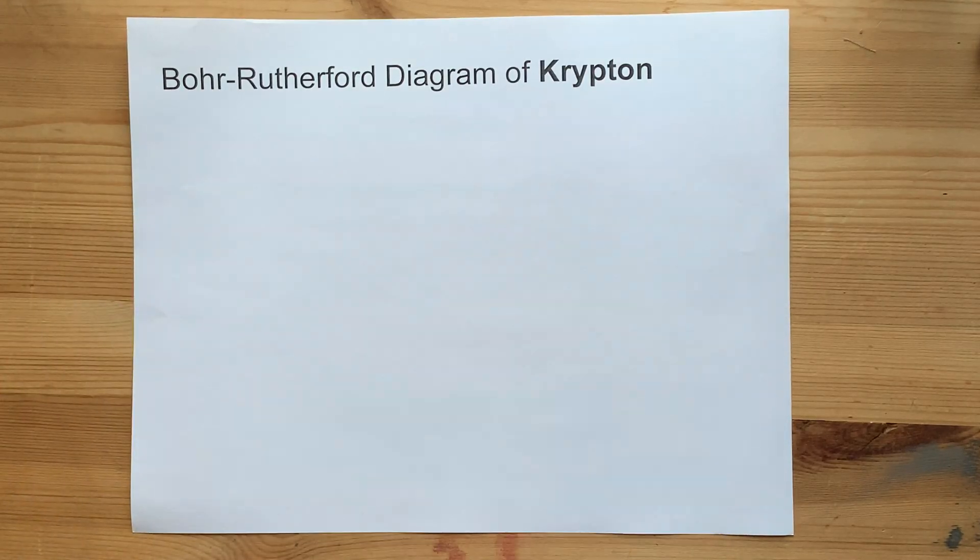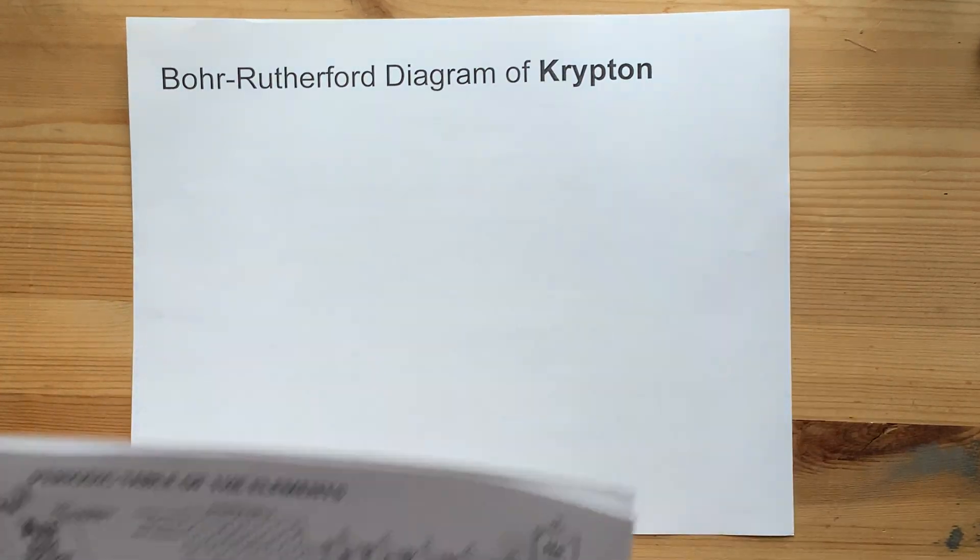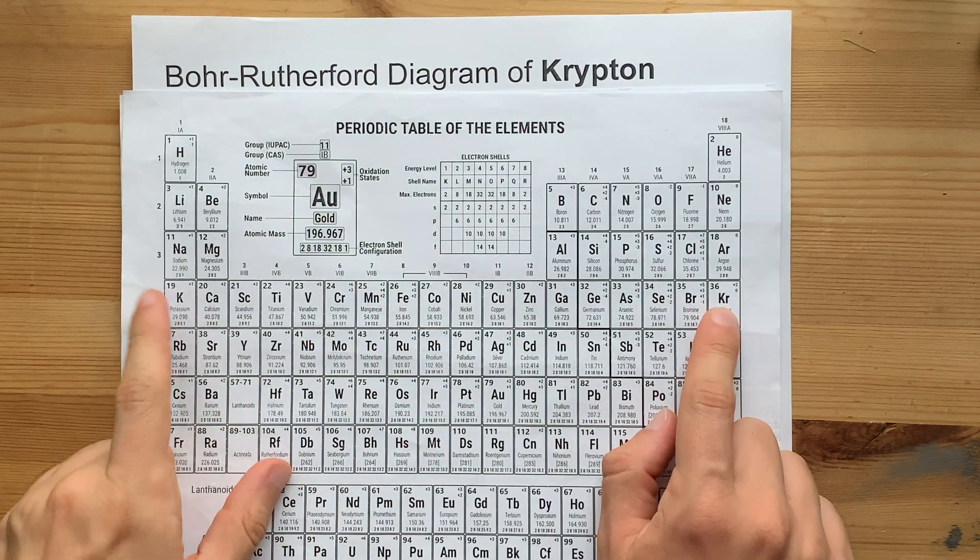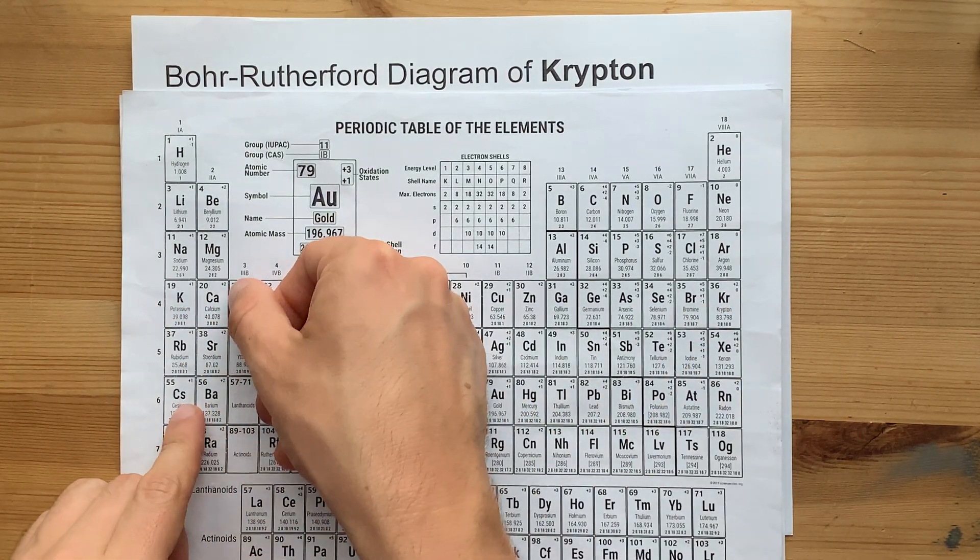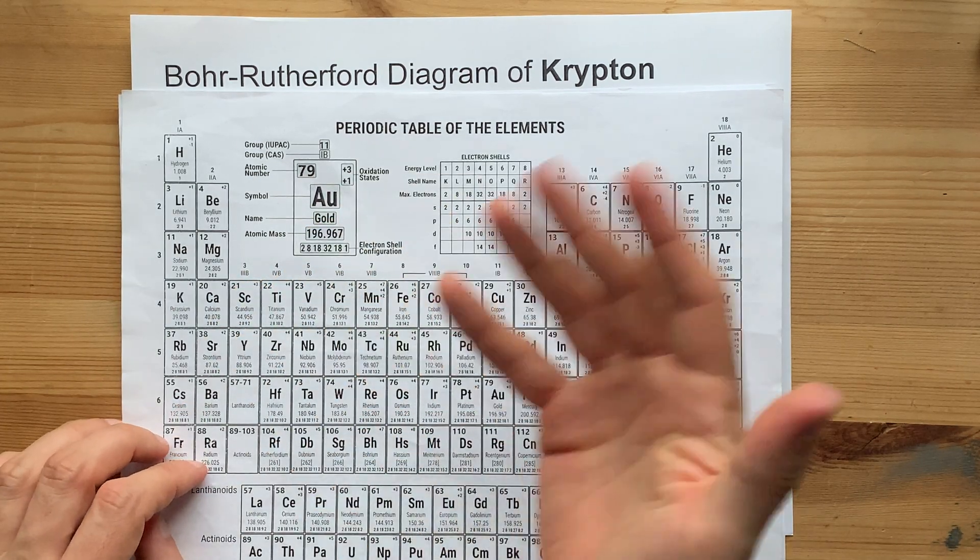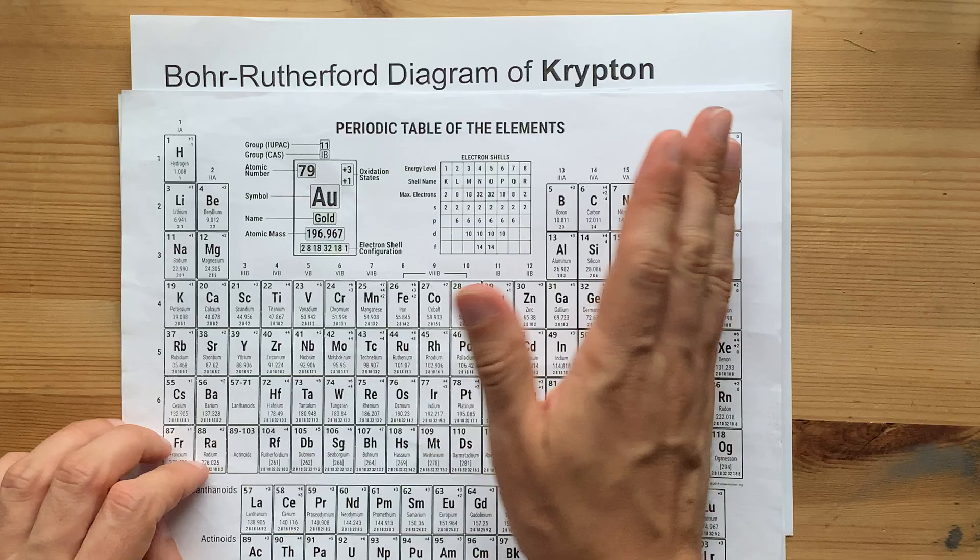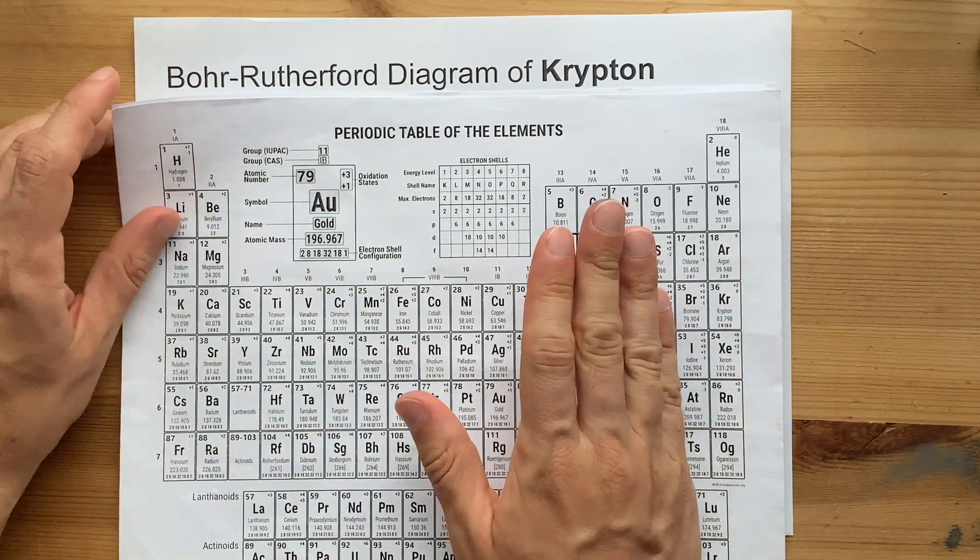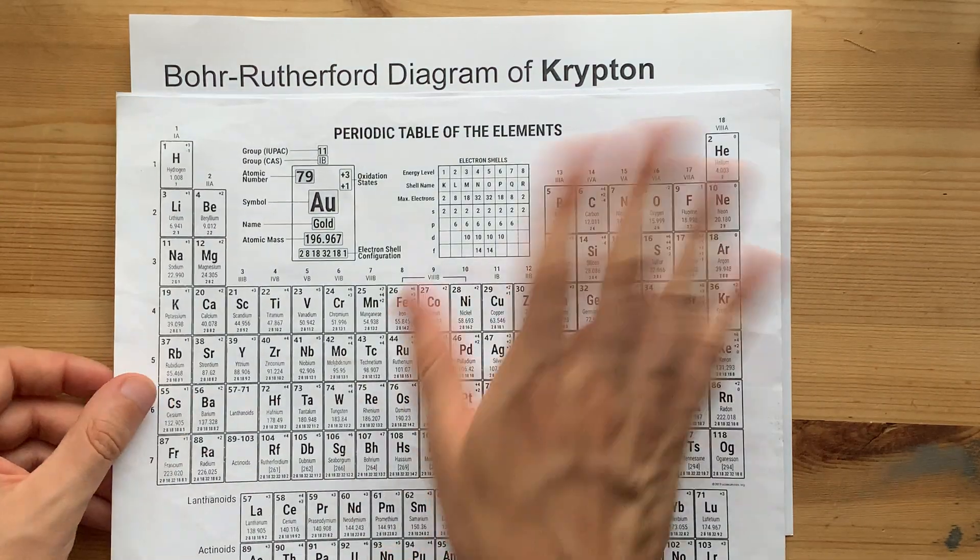Bohr-Rutherford Diagram of Krypton. Okay, you'll notice that Krypton is at the end of the fourth period. By the time you get past calcium, Bohr-Rutherford Diagram's 2-8-8-2 rule, like the way you probably originally learned to do them, is no longer in fashion. It doesn't work.